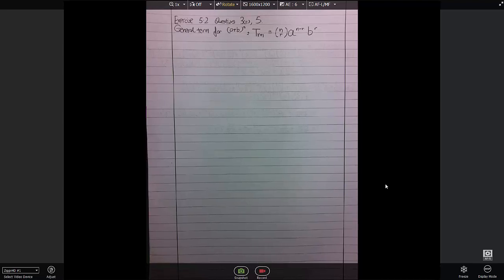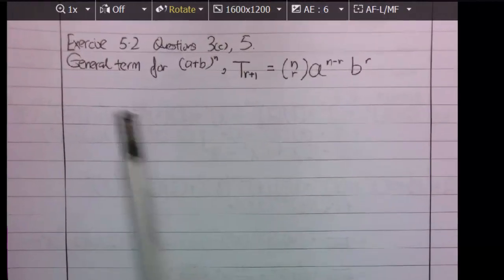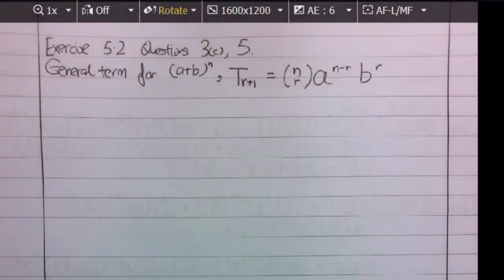Now, I'll carry on with examples from exercise 5.2, questions 3c and 5. Notice I've written out the general term for a plus b to the power of n. This is the term, and this equation, so to speak, or this general term is given in your formula sheet. And I'm going to teach you how to actually apply this general term for a plus b to the power of n.